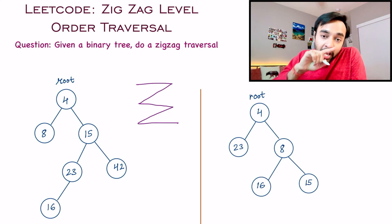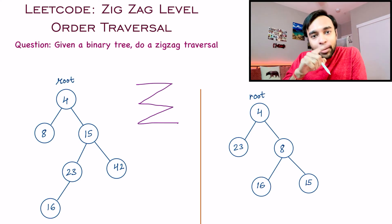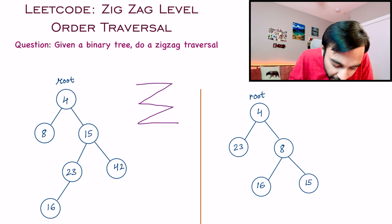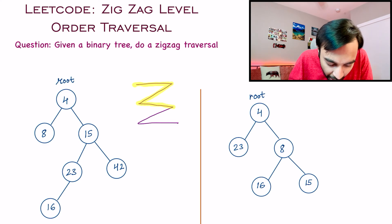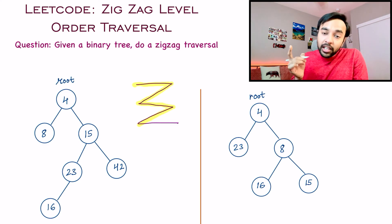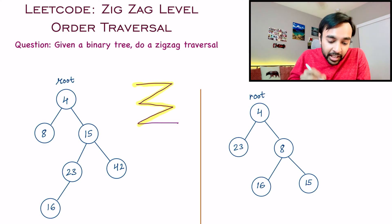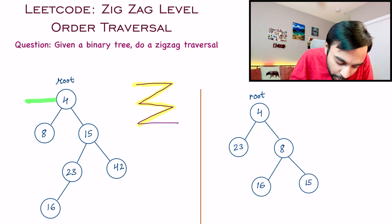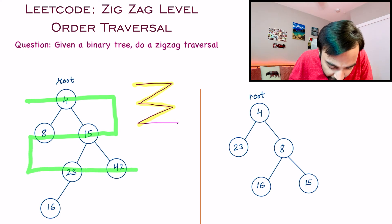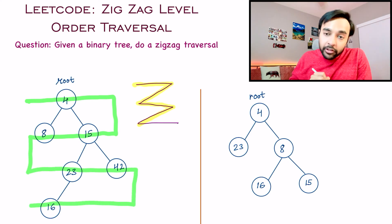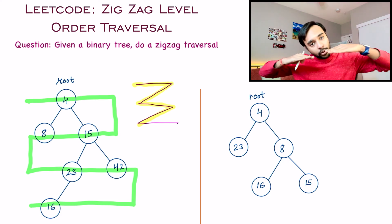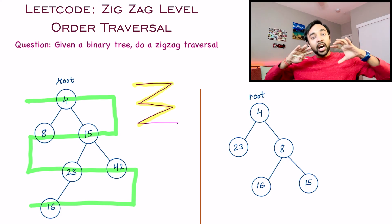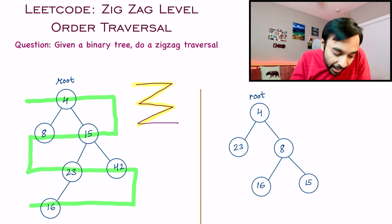You have to follow how the zigzag pattern works. You go from left to right, then right to left, then left to right, then right to left. Similarly in your tree you have to go left to right, then right to left, then once again left to right, and then once again right to left, continuing until you reach the last level.